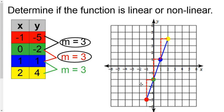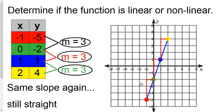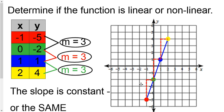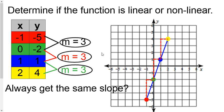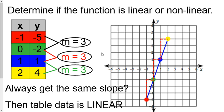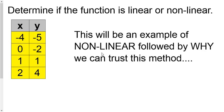Now let's look at two, four and graph that — it's the exact same slope again. If you get the same slope again and again, the line is still straight. The slope is constant, and that's the reason we would say that if you get the same slope all the way down the table, we can trust that the line would indeed be straight. So if it's always the same slope, we know it's linear.